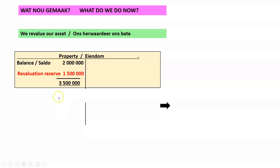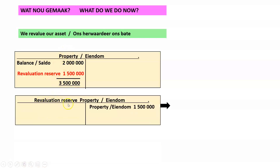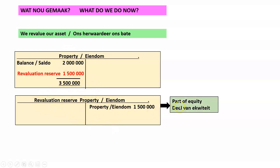For that purpose we are going to create a so-called revaluation reserve, and the credit side of that entry will go to the revaluation reserve account. Our assets are going to increase, and at the end of the year we're going to post this revaluation reserve as part of equity.